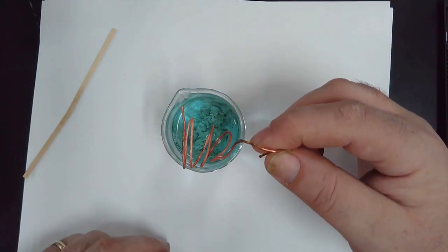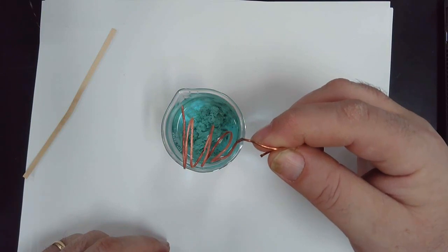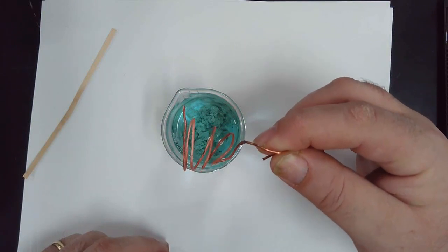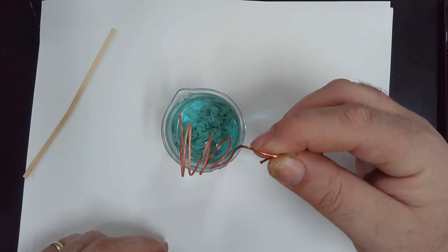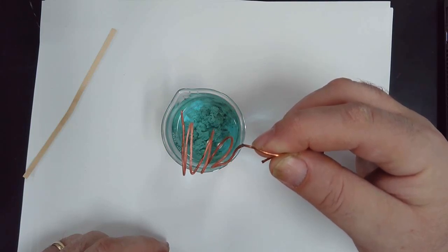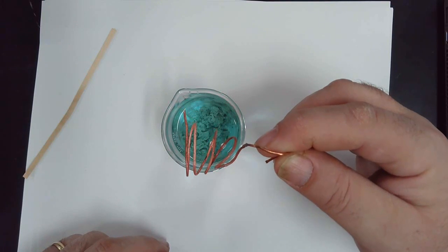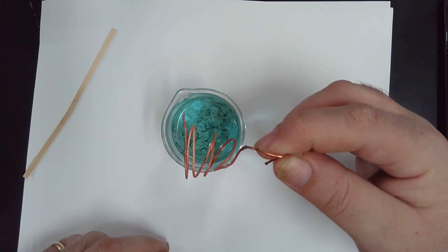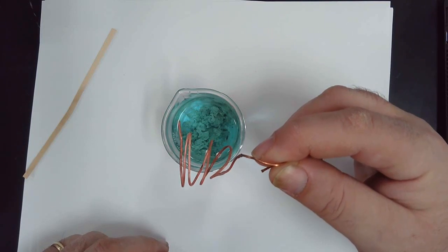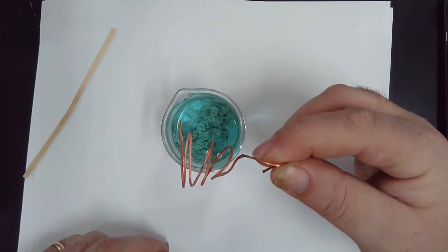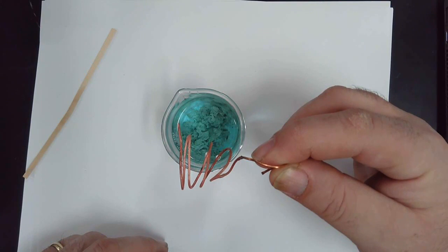You will then come to the front of the room where there is a container of acetone. Stop talking and listen please. Once you have cleaned everything off, you'll come to the front of the room, dip the copper into the acetone, and remove it from the acetone.